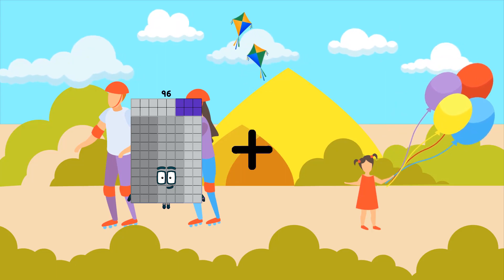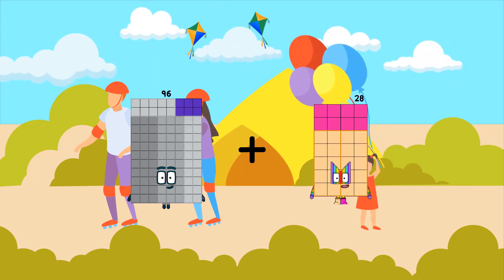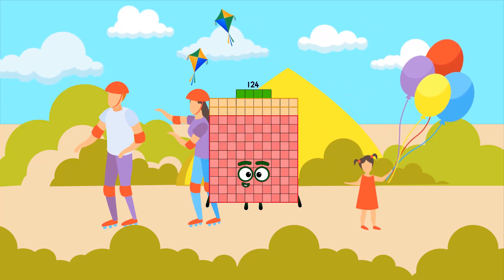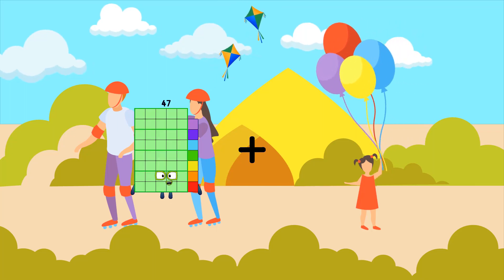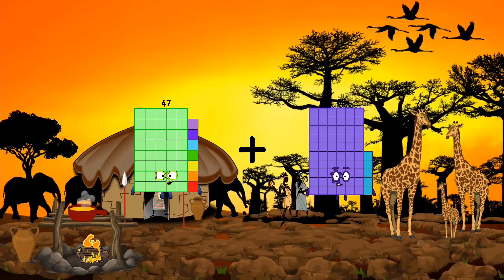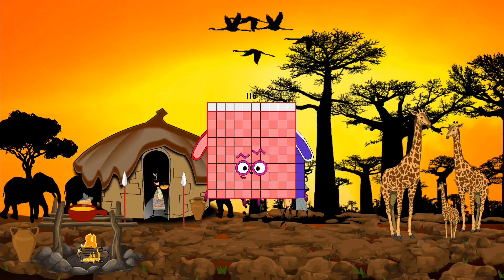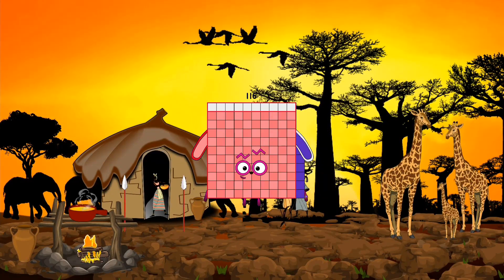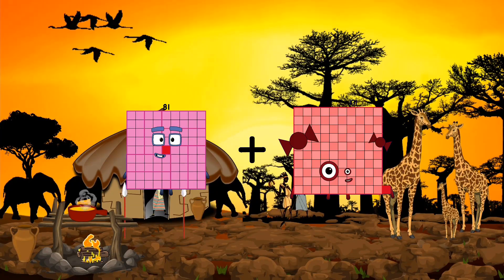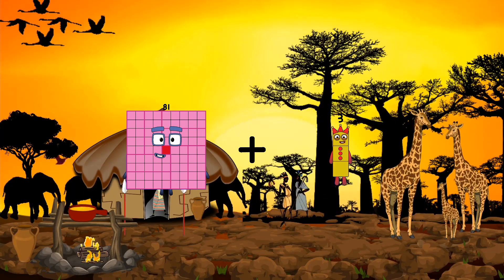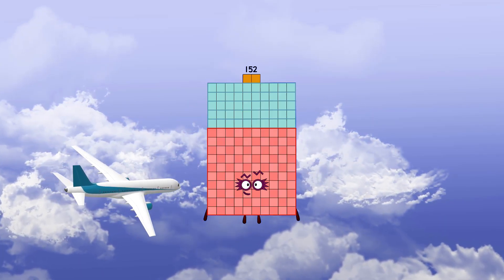96 plus 28 equals 124. 47 plus 69 equals 16. 18 plus 18 plus 21 equals 152.